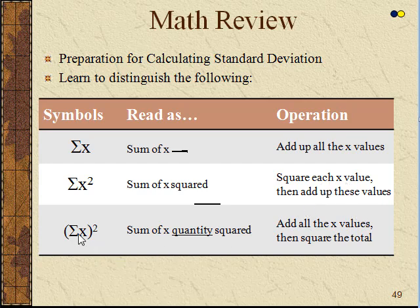And then the last one here is sum of x quantity squared, (Σx)², meaning that we add up all the values of x and then square the total. People tend to get these confused, and you need to know these three to do the standard deviation formula.